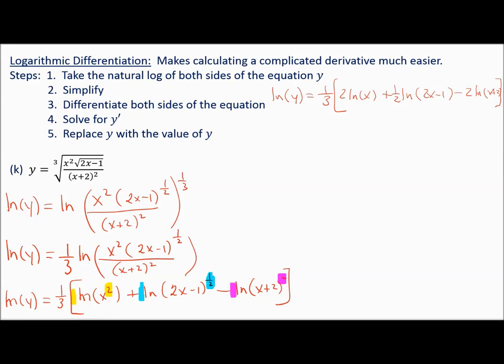Step 3: differentiate both sides. The derivative of natural log of y is 1 over y times dy over dx — remember doing that from implicit differentiation? When you take the derivative of y with respect to x, you have to put times dy over dx. You could also write y prime.